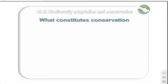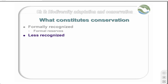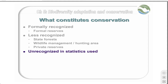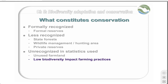Conservation of biodiversity takes place at a number of different levels. There are formally recognized IUCN reserves, typically nature reserves. But there are also many other protected areas that act for biodiversity protection but are less formally recognized — things like state forests, wildlife management or hunting areas, and particularly private game reserves in countries like South Africa, Zimbabwe and Namibia. These are often not reflected in conservation statistics. In addition, there are areas providing a limited degree of conservation not considered in statistics at all, such as unused farmlands and low-impact farming practices.